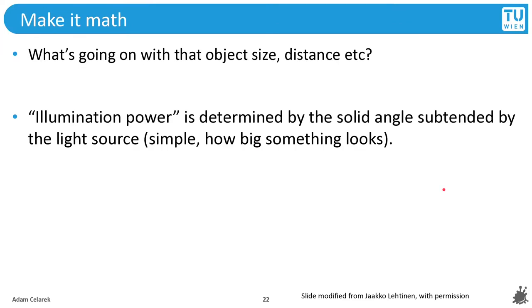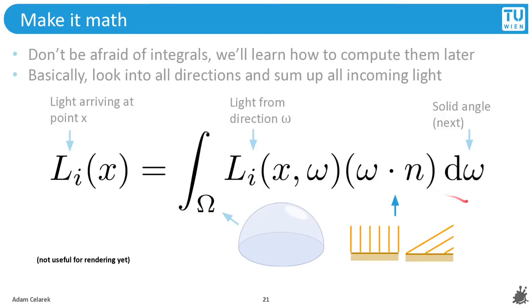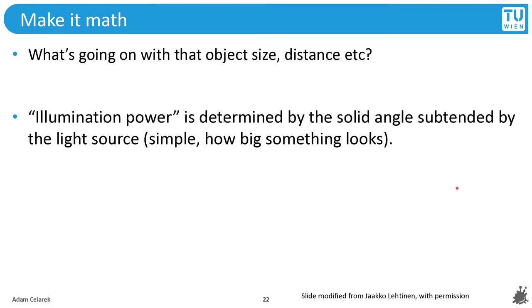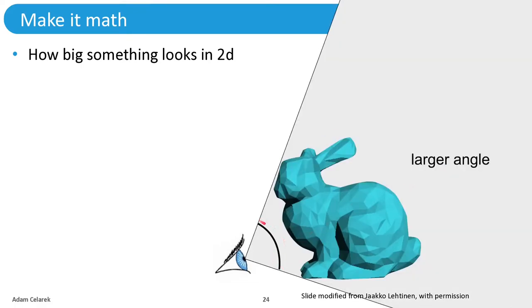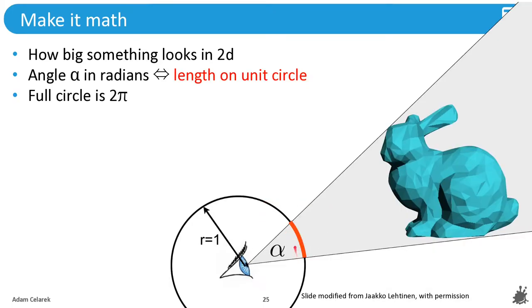So what's going with that object size, distance, etc? The illumination power is determined by the solid angle subtended by the light source, simply how big something looks. And the solid angle, this is this differential. Let's start with 2D. Say this is our light source and this is the angle you see. When the light source comes closer, the angle becomes bigger, so this means that our point is illuminated in a brighter way. The angle alpha in radians is the length on the unit circle. The full circle is 2π, so the amount of light that reaches our point directly depends on this angle.